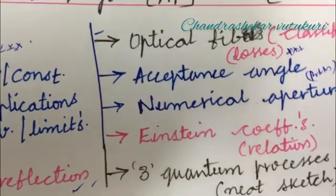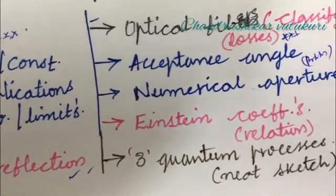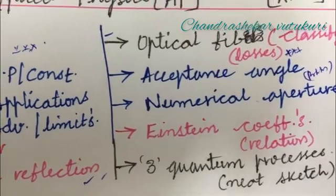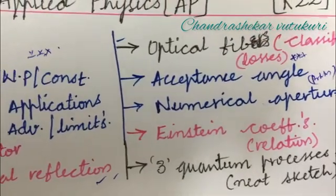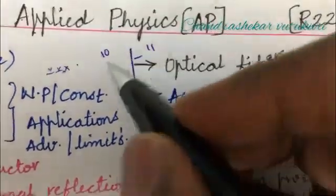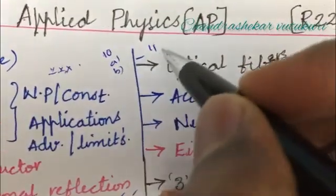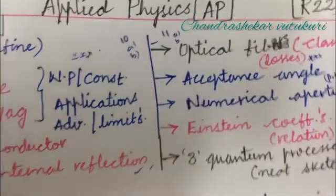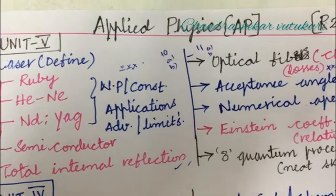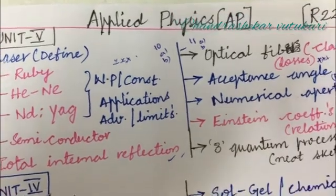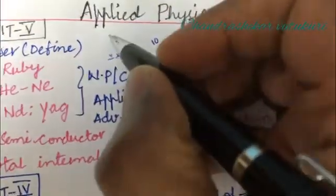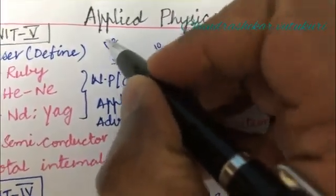Einstein equations along with its relations and three quantum processes along with neat sketches may also be one of the short as well as long questions. This may be part of the 10th as well as 11th question in your question paper. It may be 10AB or 11AB, dear students. Do not expect direct 10-mark questions; it is a combination of 5-5 split or sometimes 7-3 split also. Whereas two short questions will also cover from this.